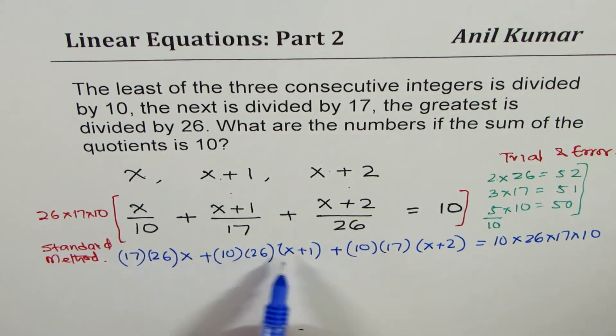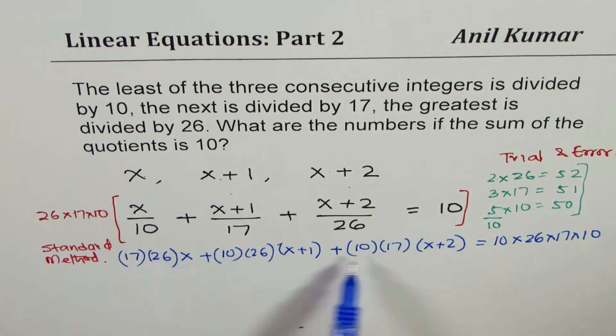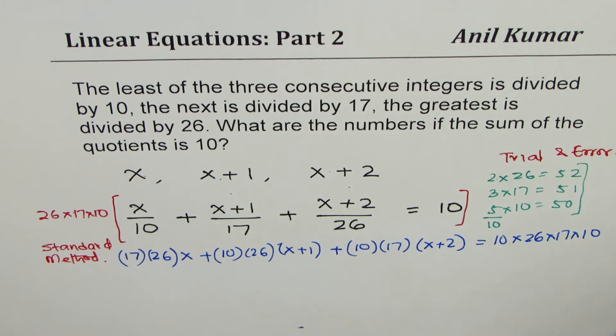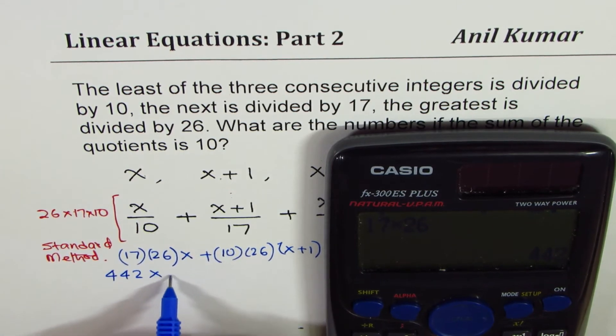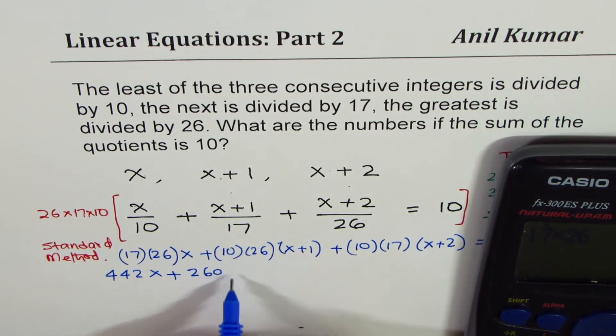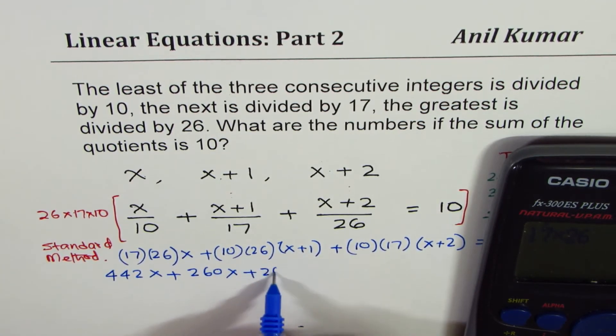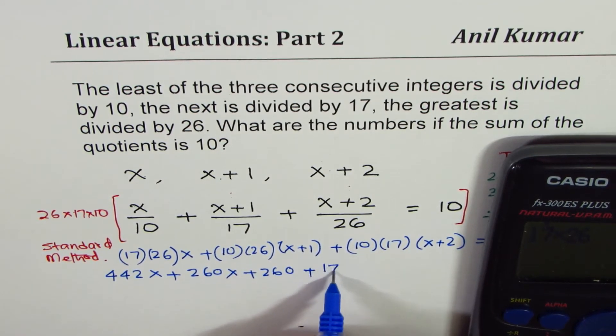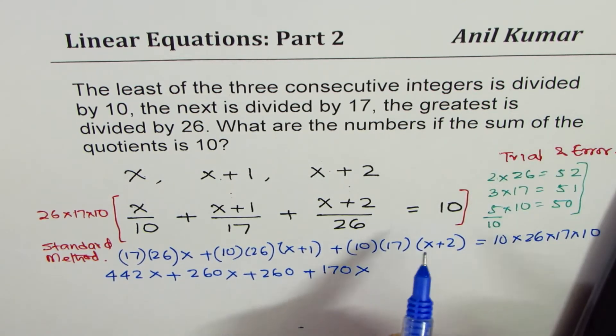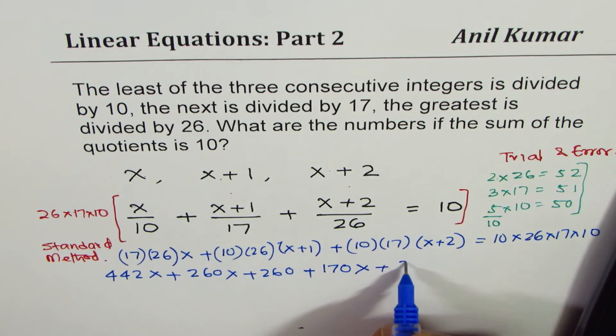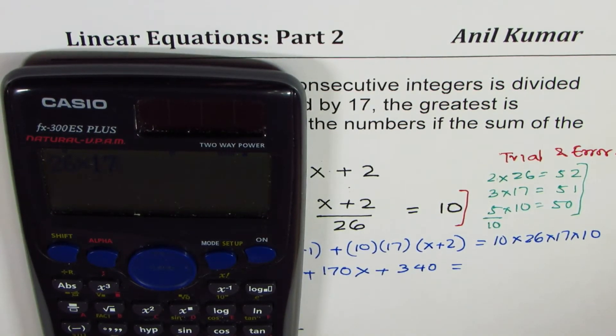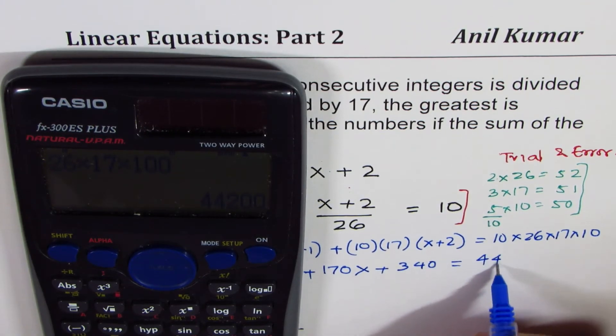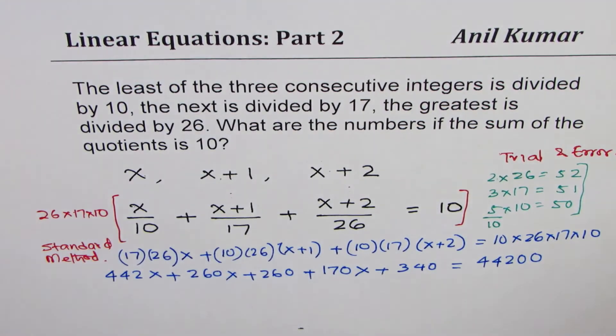Now let's open the bracket. We can open the bracket and then find the answer. We are not factoring it further. We'll just open the bracket and we are working with very big numbers now. That is the only thing. So 17 times 26, let's do it. 17 times 26 equals to 442. So the first term is 442x plus, this is 260, so we can write 260x and the number itself plus 260 plus, this is 170. 170x and 170 times 2, that becomes 340 equals to, so we have 26 times 17 times 100, 10 times 10. 44,200.